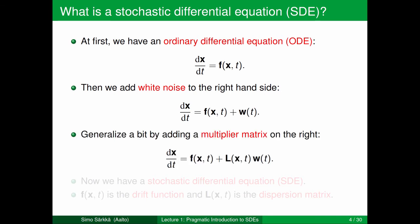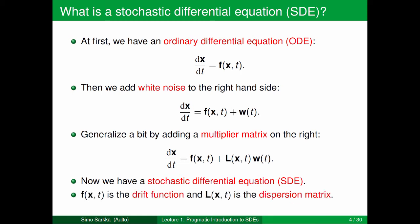We can generalize this equation by adding a multiplier matrix L of x and t, which determines how the white noise actually enters the system. The density or amplitude of the noise might depend on the state that we are in. This is a stochastic differential equation in the general form we will study during this course. Here, f, which is a function of x and t, is called the drift function; L, also a function of x and t, is the dispersion matrix; and W_t is the white noise.